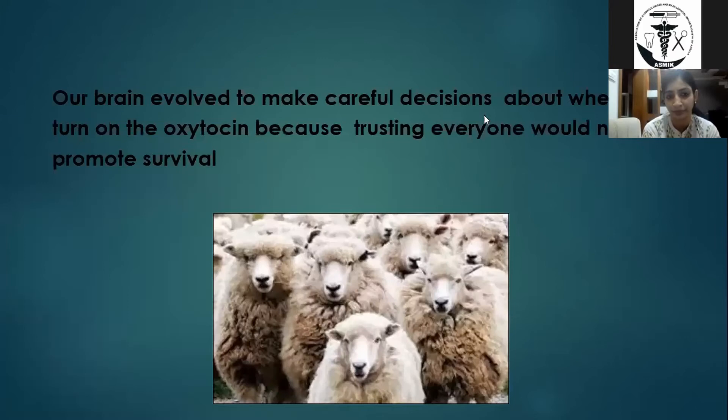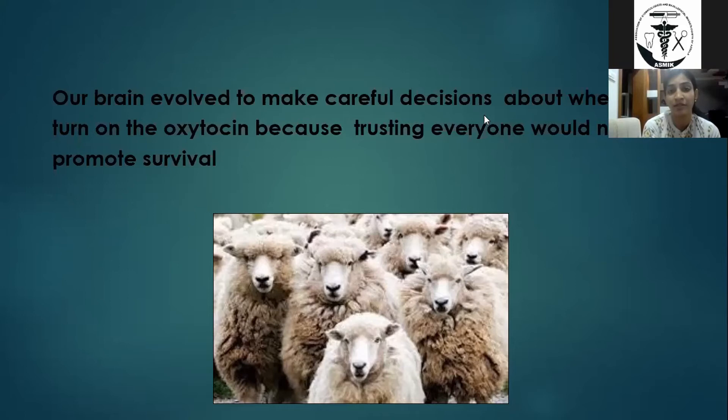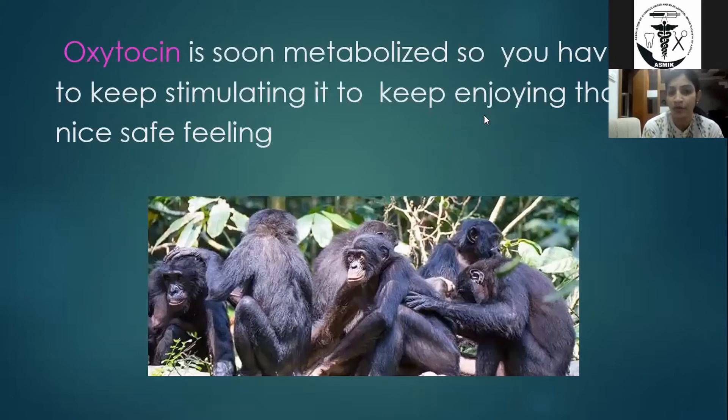Our brain has evolved to make careful decisions about when to turn on oxytocin, because trusting everyone would not promote survival. It is our natural instinct to decide whether to trust someone — if you build trust, small amounts of oxytocin are released. Oxytocin is also soon metabolized, so we have to keep stimulating it to enjoy that safe feeling.